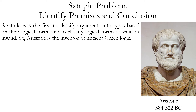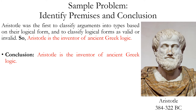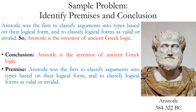Let's start with this sample argument and look for any indicator words. 'Aristotle was the first to classify arguments into types based on their logical form and to classify logical forms as valid or invalid. So Aristotle is the inventor of ancient Greek logic.' The word 'so' is indeed a conclusion indicator, so the statement that follows is the conclusion. The sentence that comes before contains the premises. We need to check whether all of it counts as a premise — and the answer is yes, because all of that sentence helps prove the conclusion.